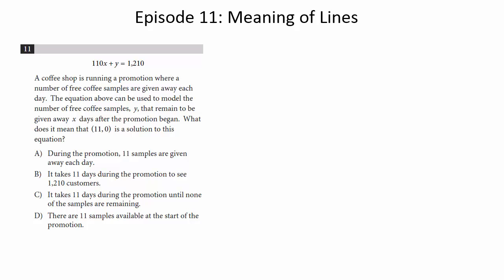A coffee shop is running a promotion where a number of free coffee samples are given away each day. The equation above can be used to model the number of free coffee samples, y, that remain to be given away x days after the promotion began. What does it mean that 11, 0 is the solution to this equation?